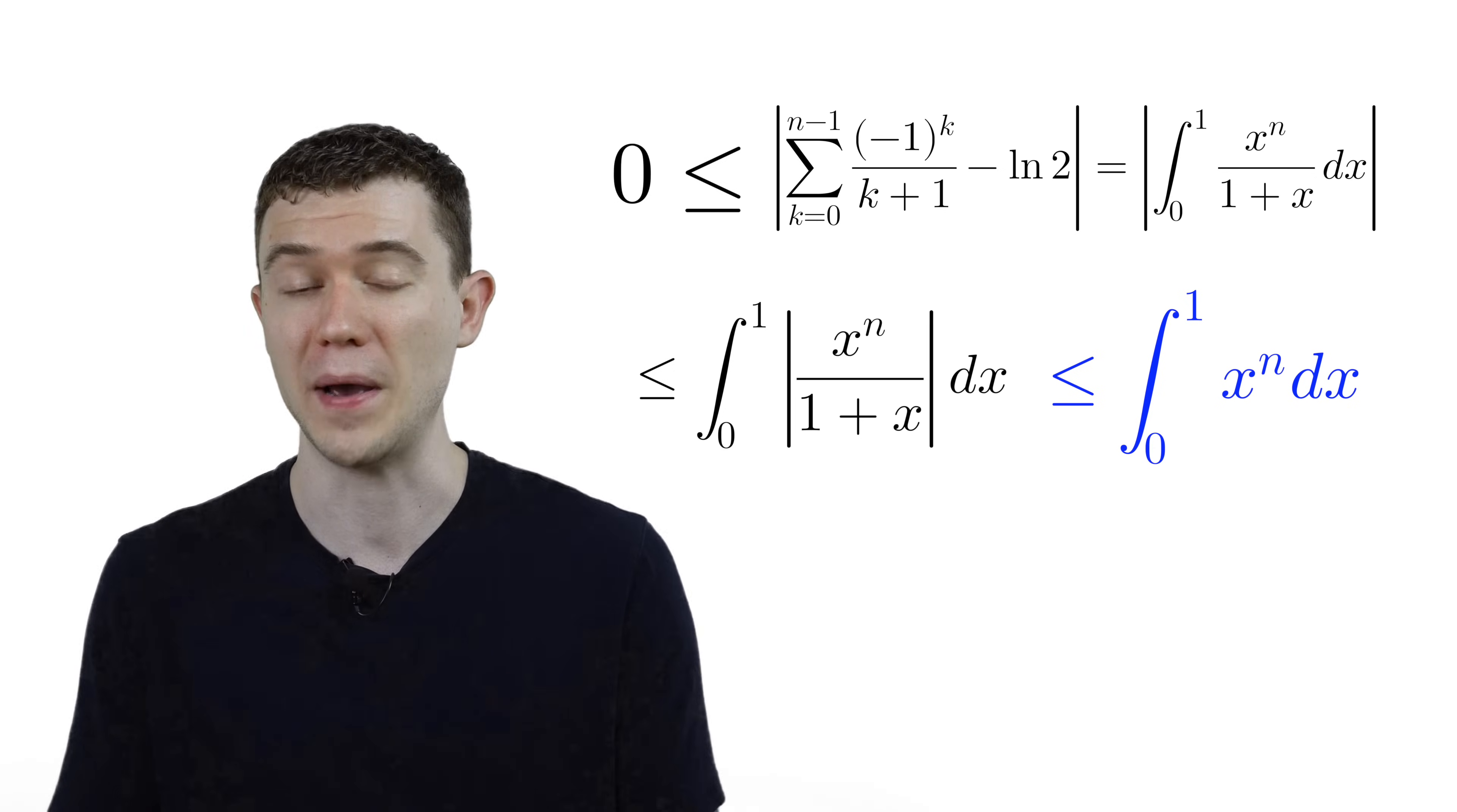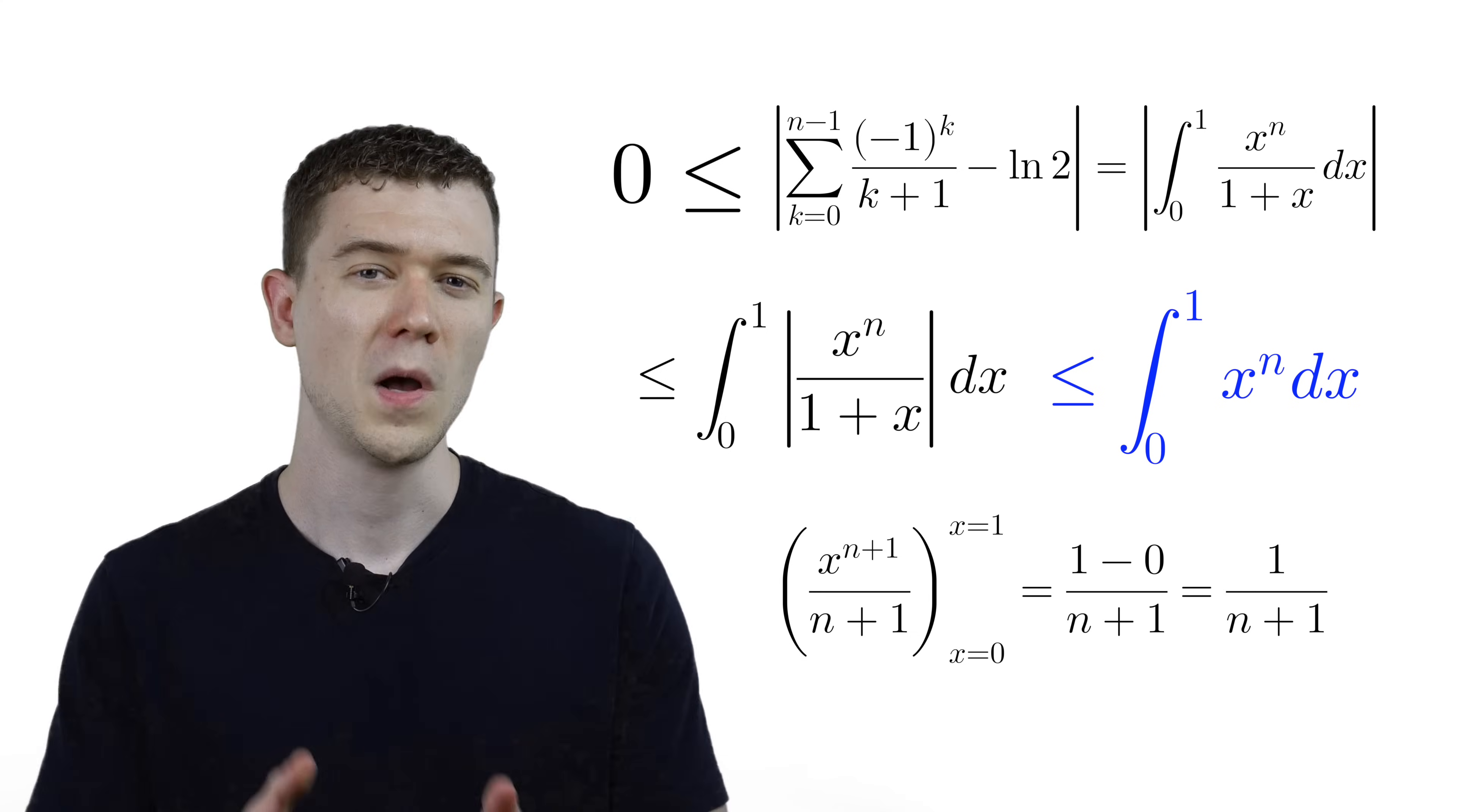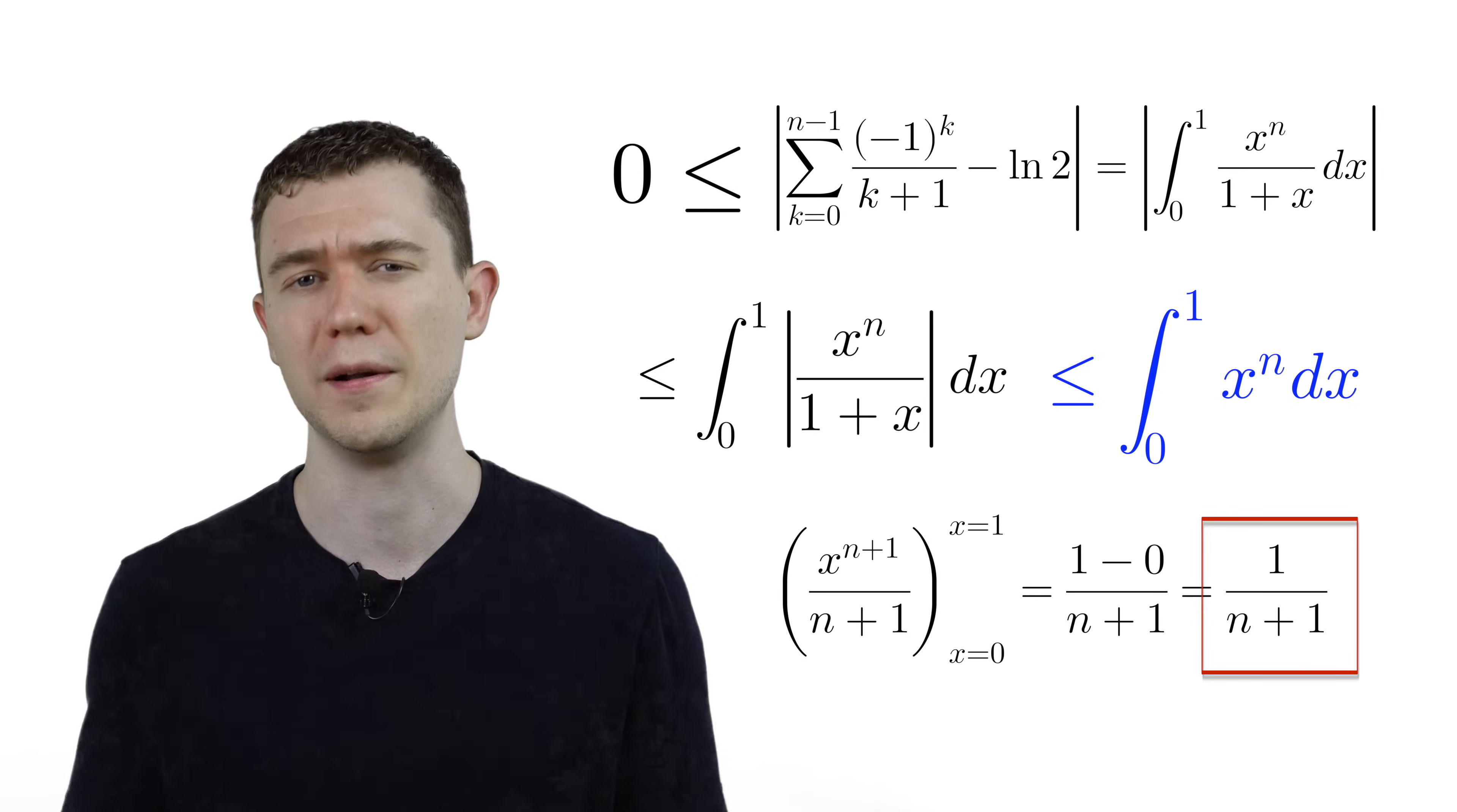Just add 1 to the power, divide by the new power, substitute in 1 minus substitute in 0, and we get the quantity 1 over n plus 1. Let's collect our thoughts. We have 0 less than or equal to the absolute value of this finite sum minus natural log 2, which is also less than 1 over n plus 1.